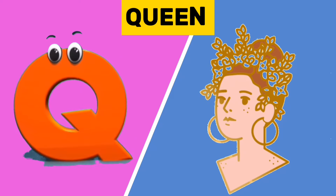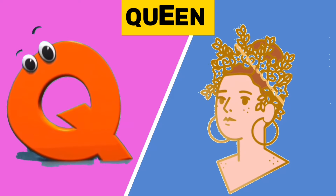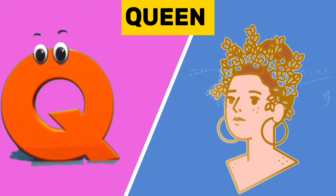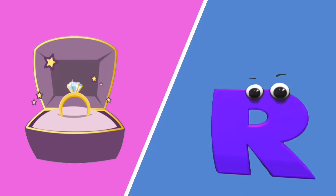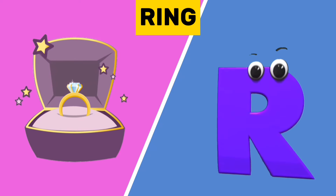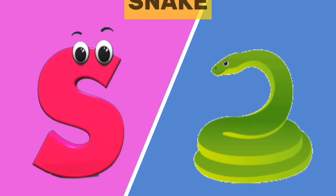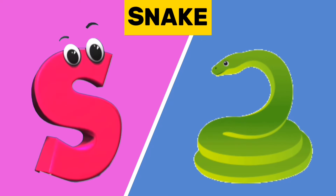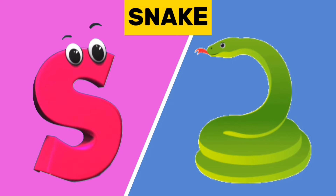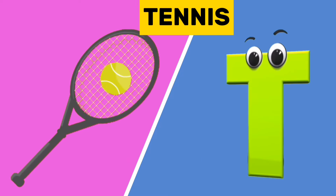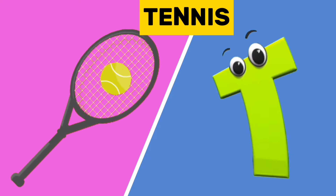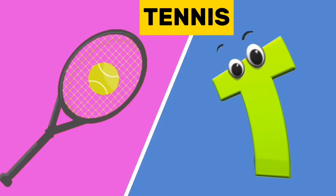Q is for queen. Qu, qu, queen. R is for ring. R, r, ring. S is for snake. S, s, snake. T is for tennis. T, t, tennis.